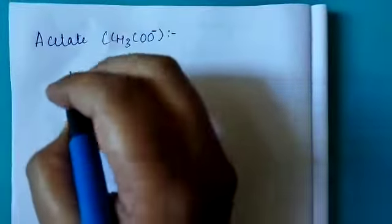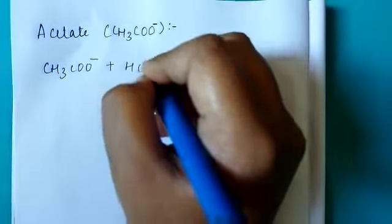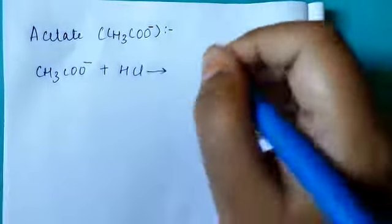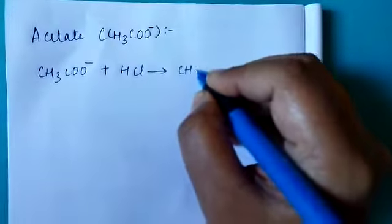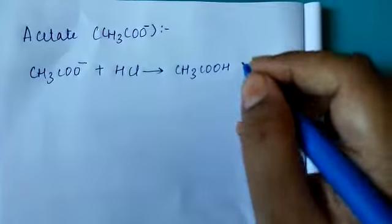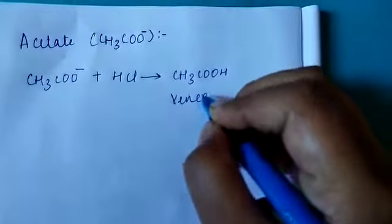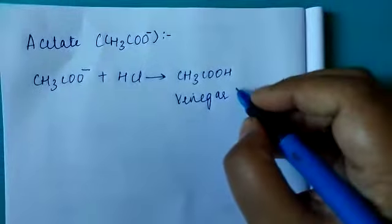So this acetate, the salt containing this acetate ion will react with HCl and you will observe the vinegar smell coming out of the test tube. Why that vinegar smell is coming out? Due to the formation of acetic acid.